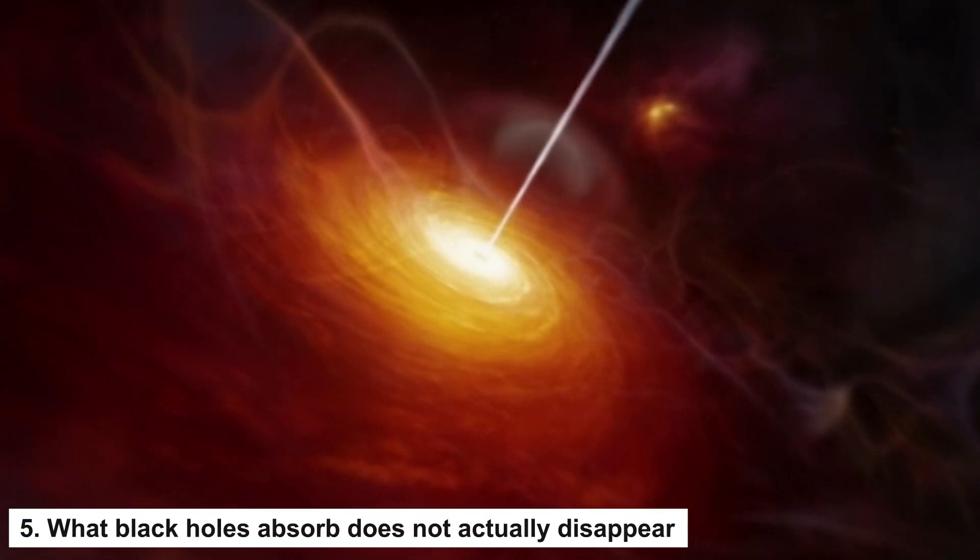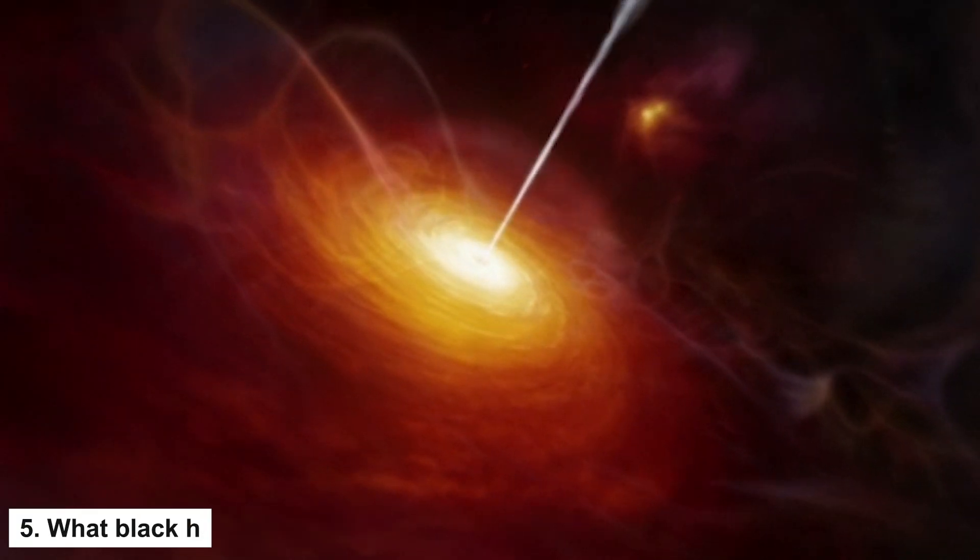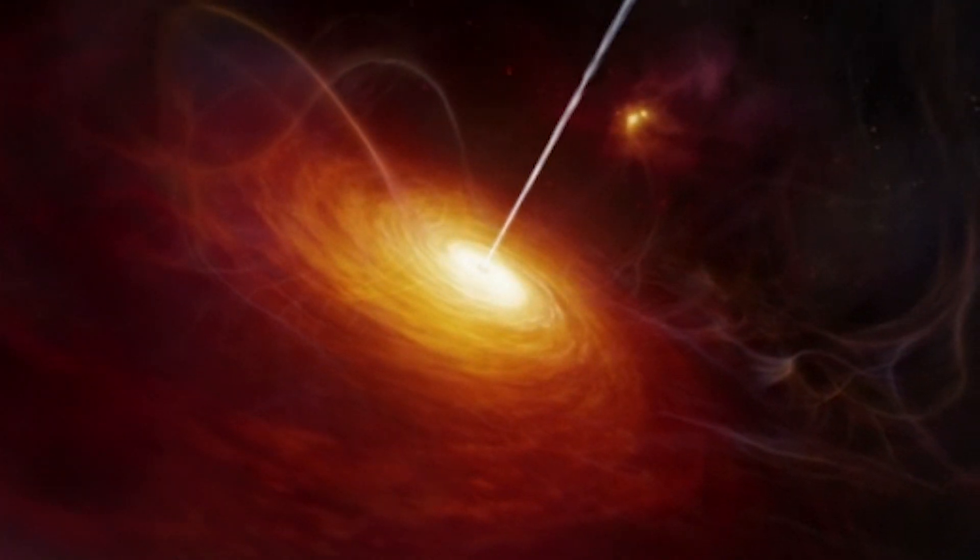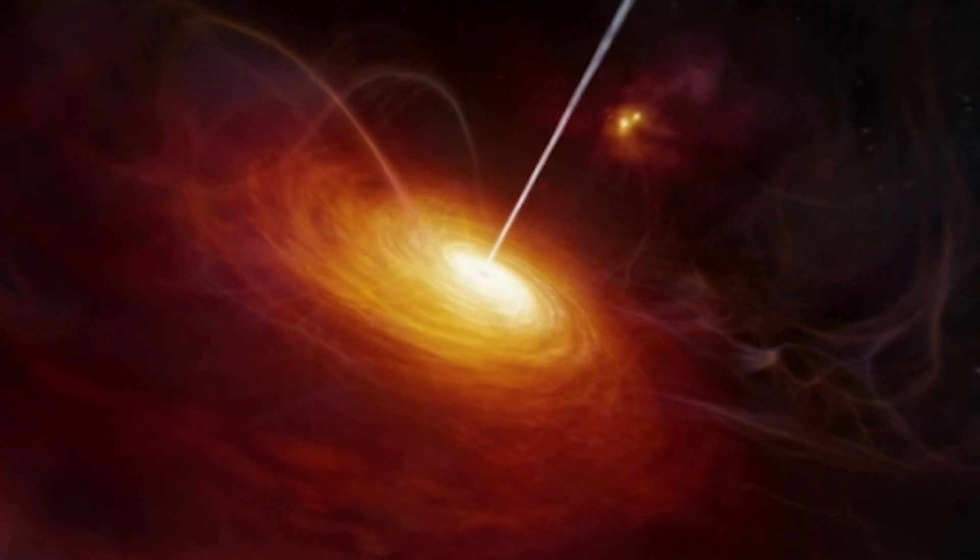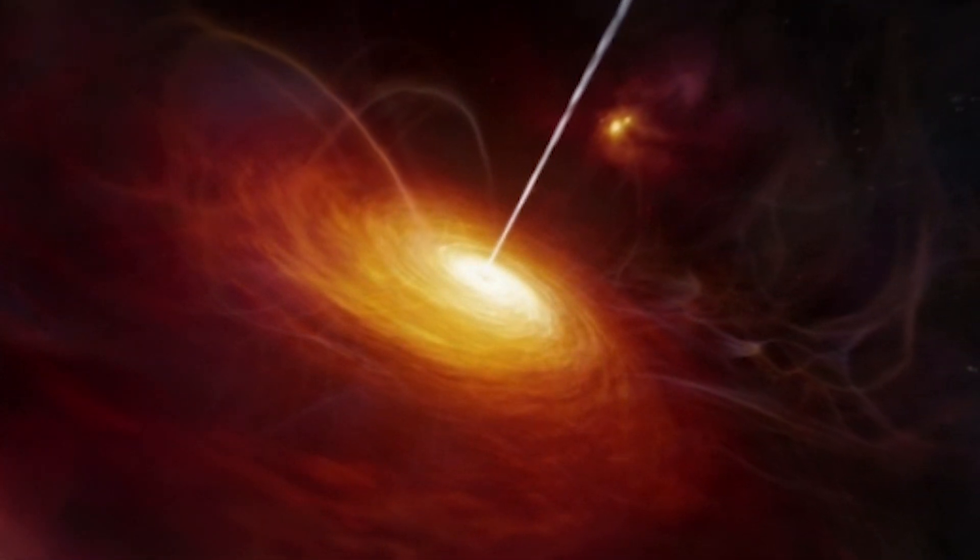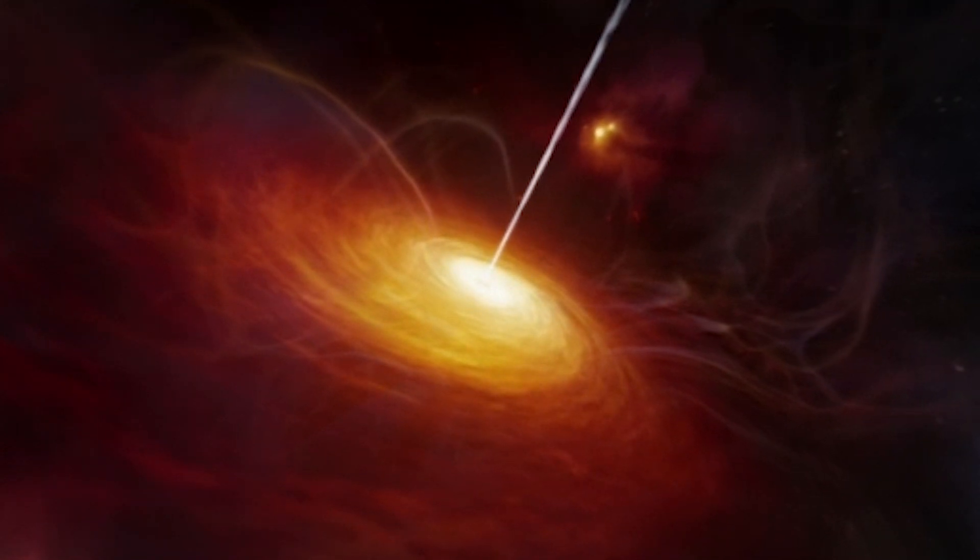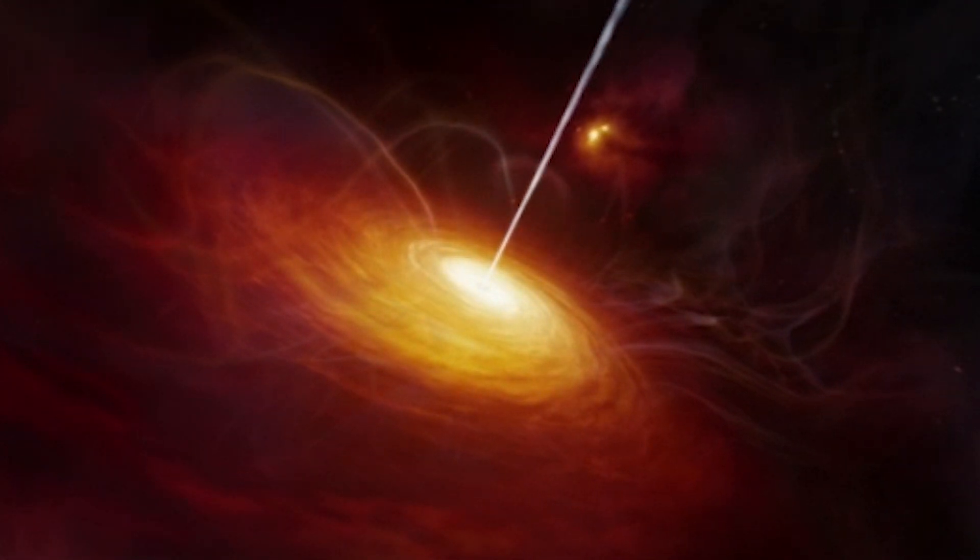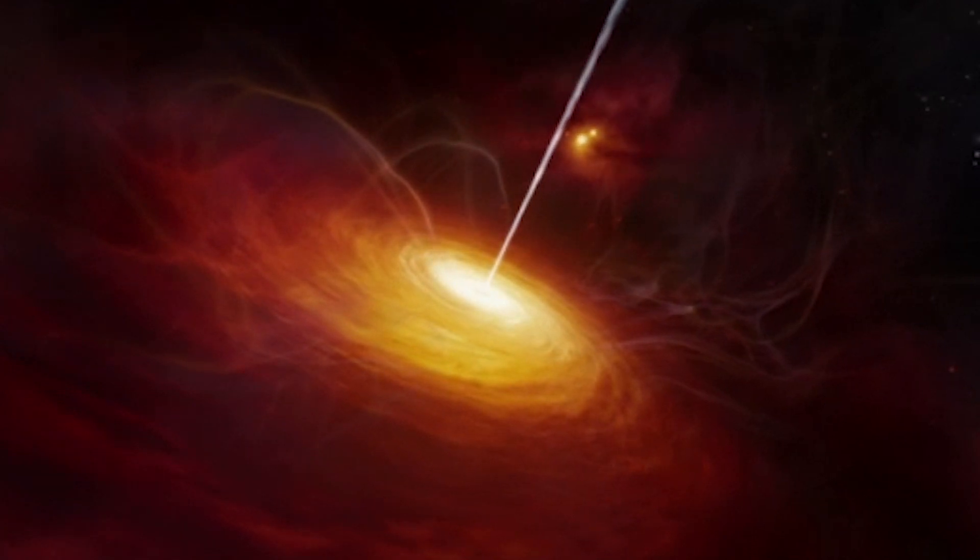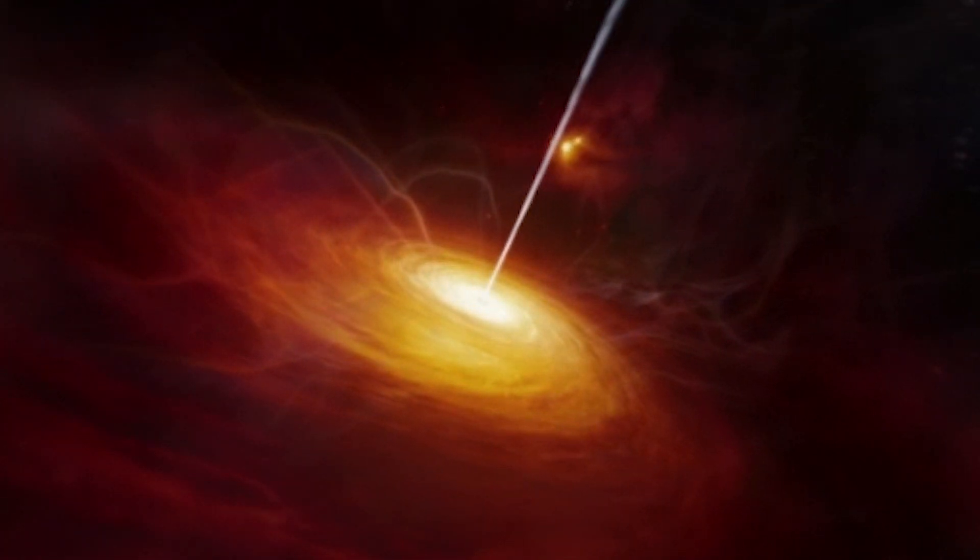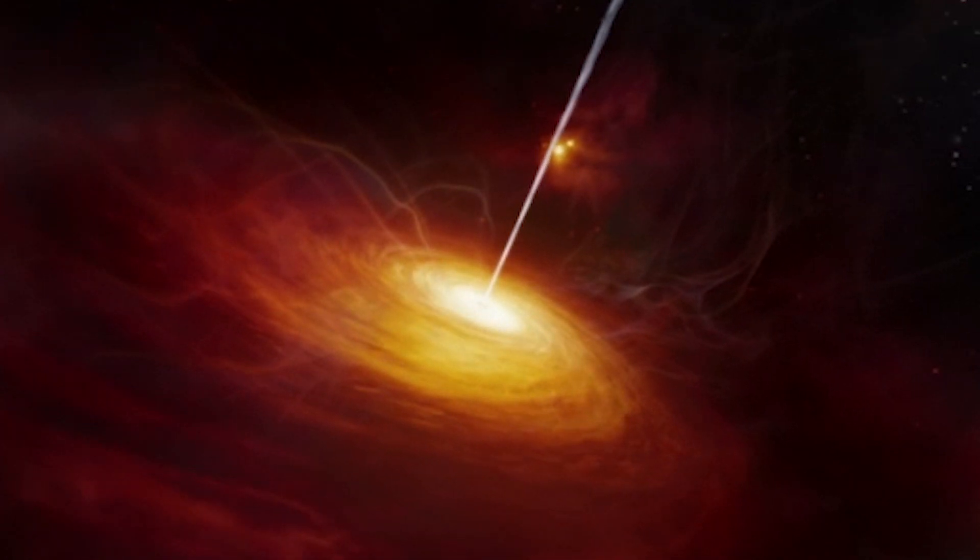Number 4: What black holes absorb does not actually disappear. At first glance, black holes seem to wipe out everything they absorb. However, quantum physics firmly assumes that information is never truly lost, only redistributed in black holes. This happens just before the surface. The three-dimensional matter is split into thousands of two-dimensional pieces that then become part of the black hole's surface. So this can be understood as a hologram in which 3D information is recoded into 2D information.